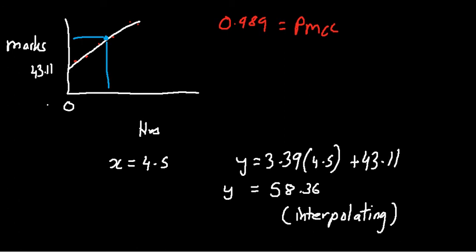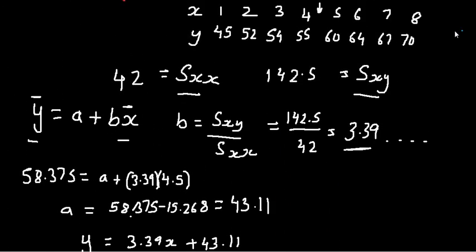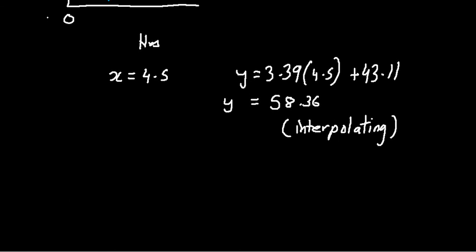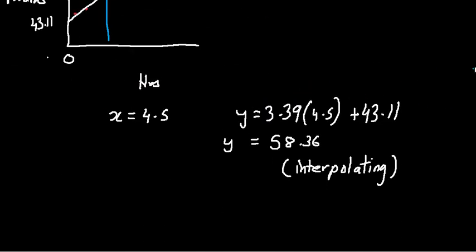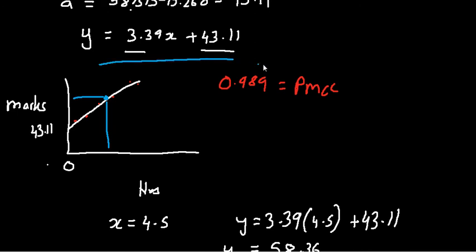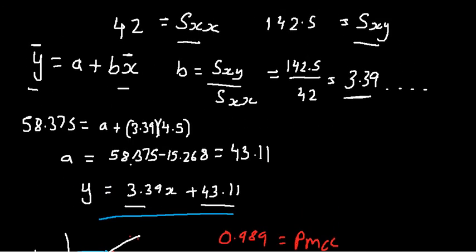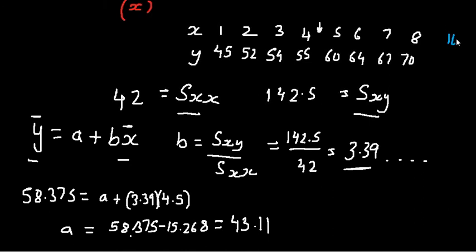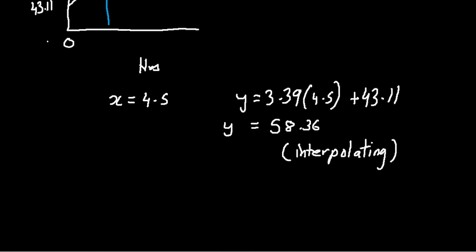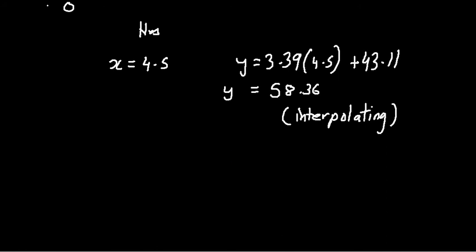Now, they might ask you, okay, so you're saying this is how it works, the relationship between hours of sleep and the marks, this formula here. So if you slept 10 hours, how much marks would you expect to score? So if you slept for 10 hours, I've got to substitute 10 in place of x. So that's 33.9, because I put 10 there, that makes it 33.9 plus 43.11. I get 77.01 marks. Now, then they'll ask you again, whether this is a reliable value.